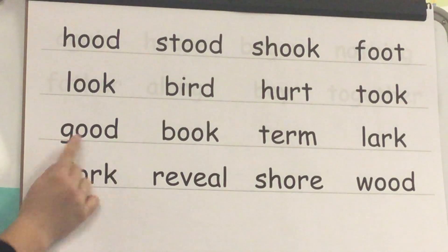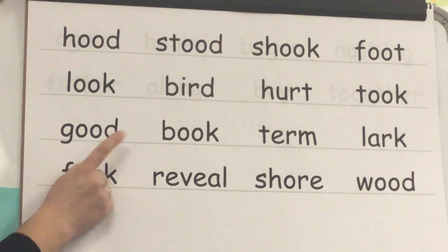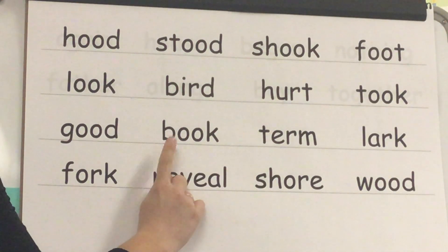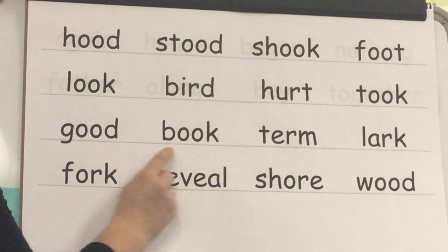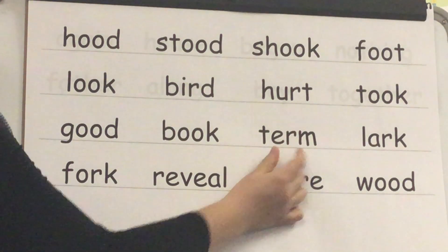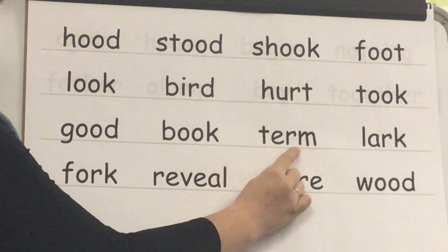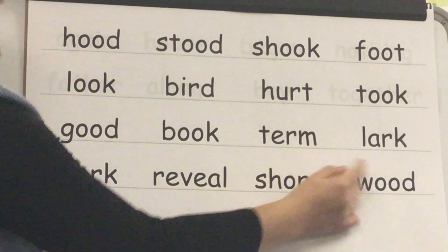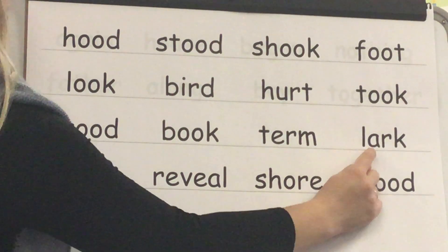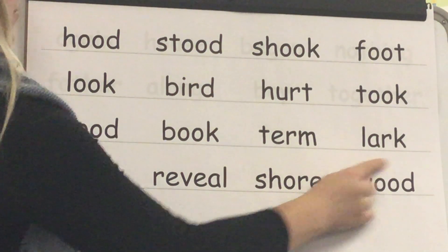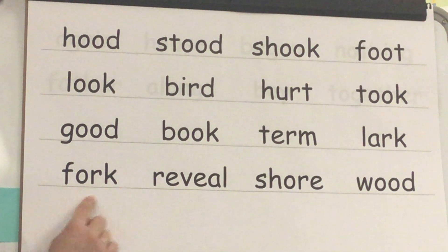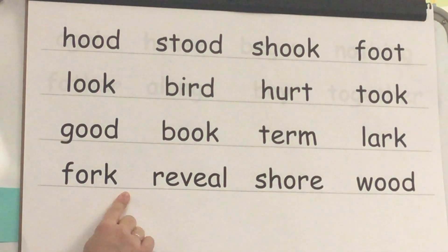Sound /uh/, blend G-U-D, word: good. Sound /uh/, blend B-U-K, word: book. Sound R, blend T-UR-M, word: term. Sound R, blend L-ARK, word: lark. Sound OR, blend F-OR-K, word: fork.